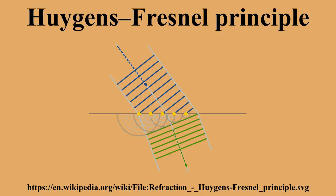In 1678, Huygens proposed that every point which a luminous disturbance reaches becomes a source of a spherical wave. The sum of these secondary waves determines the form of the wave at any subsequent time. He assumed that the secondary waves traveled only in the forward direction, though the theory does not explain why. He was able to provide a qualitative explanation of linear and spherical wave propagation and to derive the laws of reflection and refraction, but could not explain the deviations from rectilinear propagation that occur when light encounters edges, apertures, and screens — commonly known as diffraction effects.